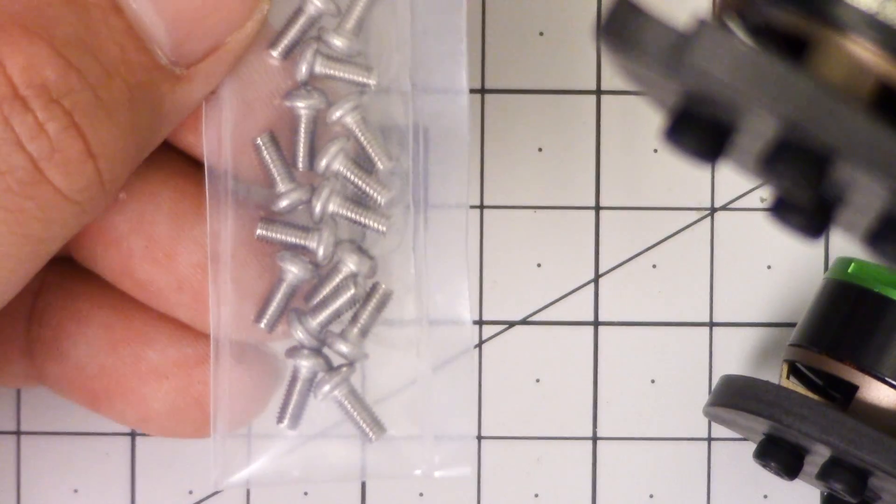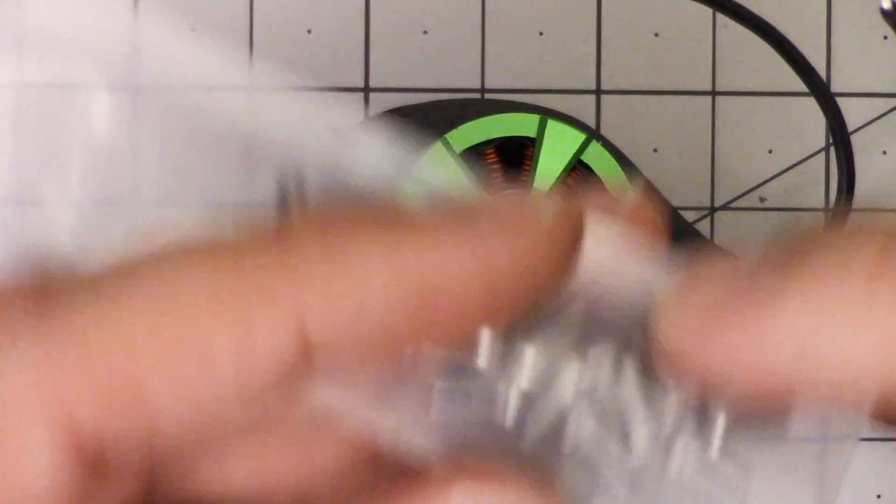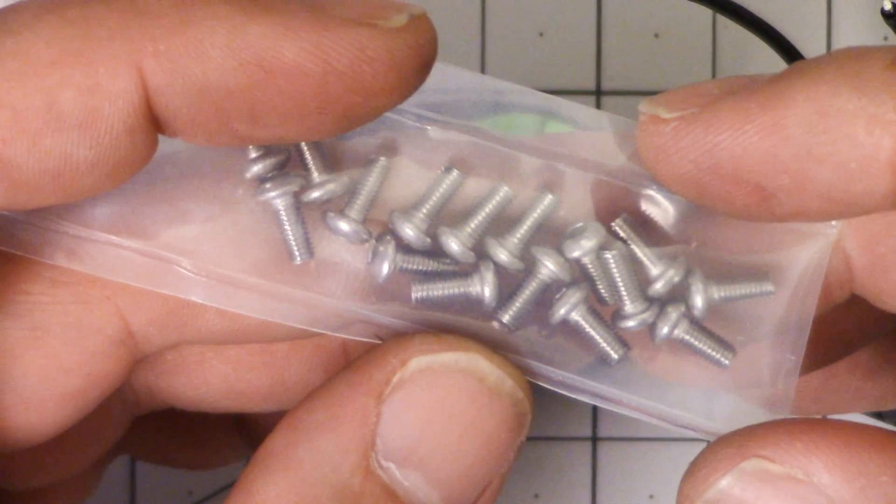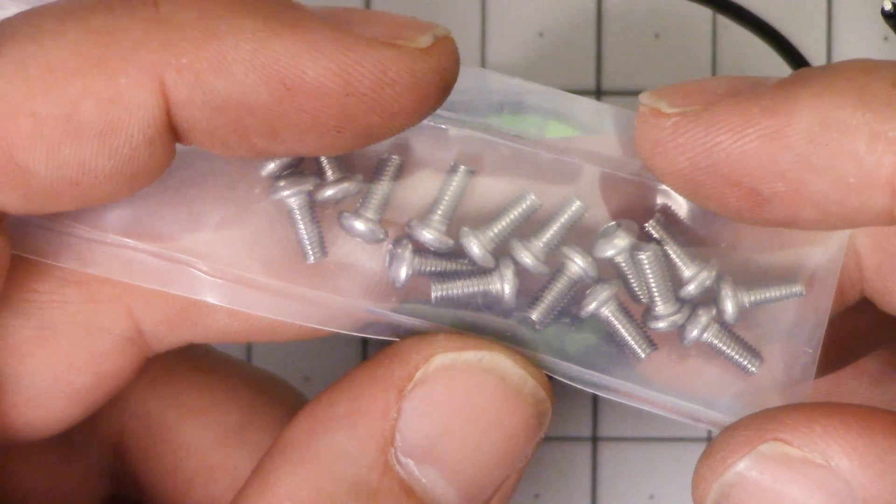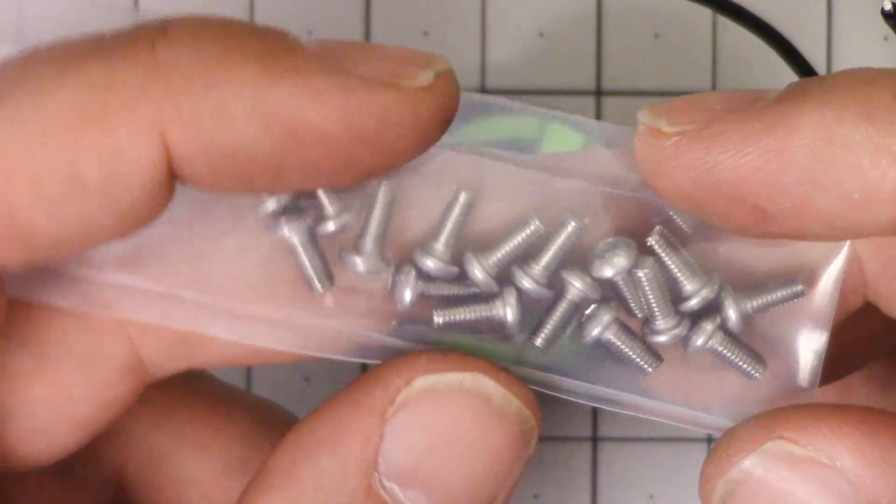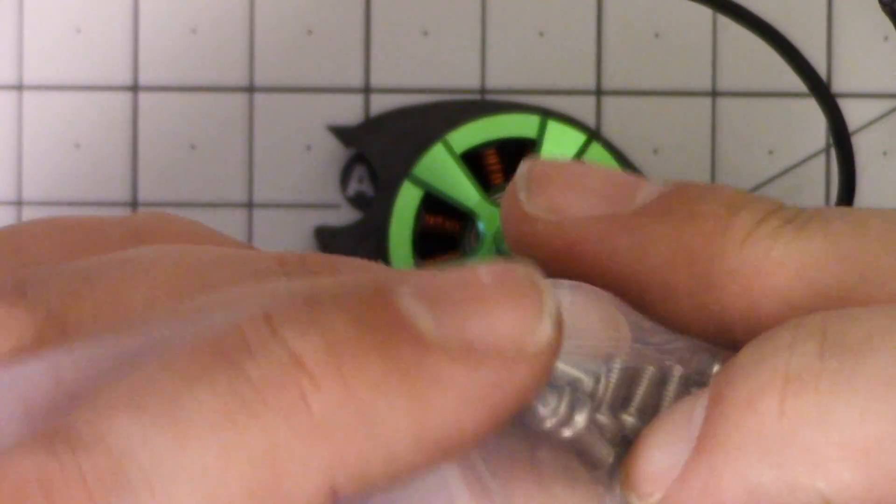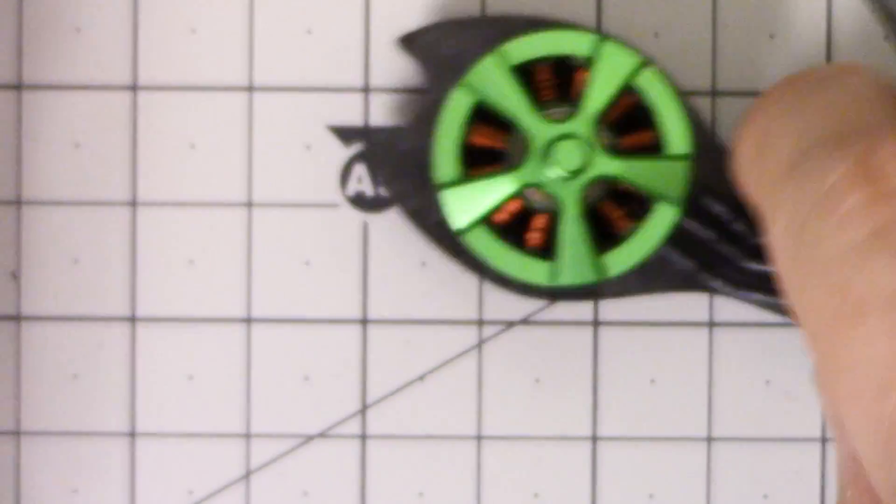The frame that came from Shendrones has these screws with it. They are slightly longer and would protrude through more. I'm not going to use them because I feel like these other screws are in there tight enough that they're not going to back out. If I really cared I could use Loctite.